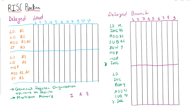Hello students. In our previous tutorial we discussed various solutions related to data dependency and branch difficulty. Here we will try to discuss the RISC pipeline.